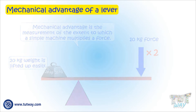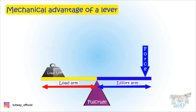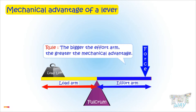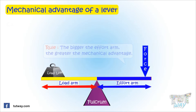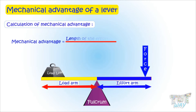We know a lever has an effort arm and a load arm, and the bigger the effort arm, the bigger the mechanical advantage. We can also calculate the mechanical advantage by dividing the length of the effort arm by the length of the load arm.